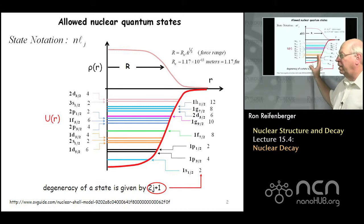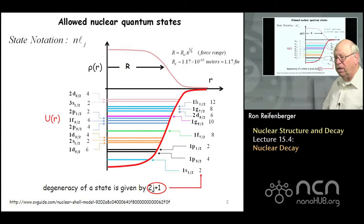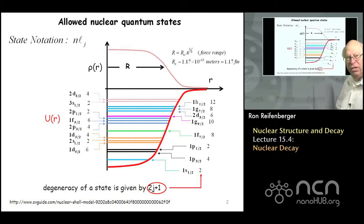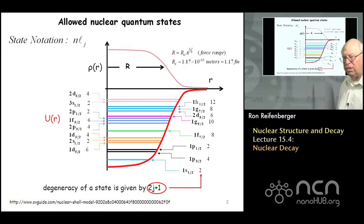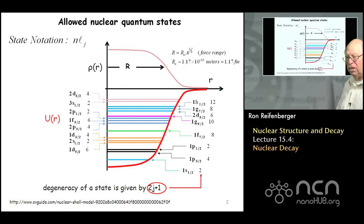It's important to understand this diagram. First of all it's a qualitative diagram — it just indicates the order in which the nuclear states are filled. This order reproduces the magic numbers for stable nuclei. There are certain nuclei with certain numbers of neutrons and protons that seem to be exceptionally stable, and the advantage of this scheme for the nuclear states is that it reproduces those magic numbers.